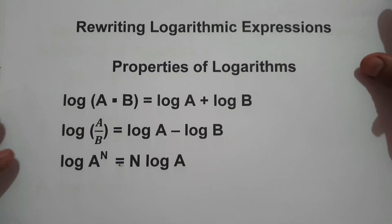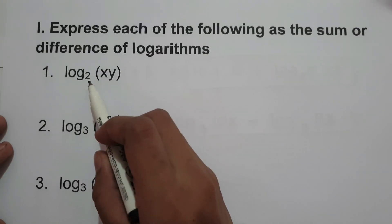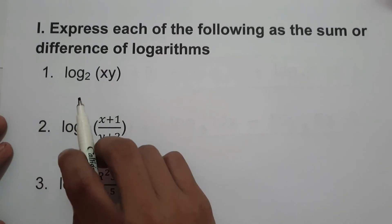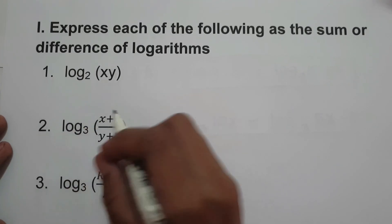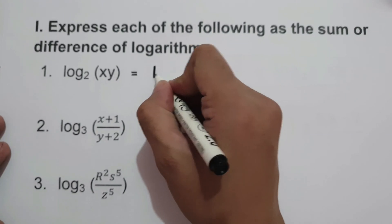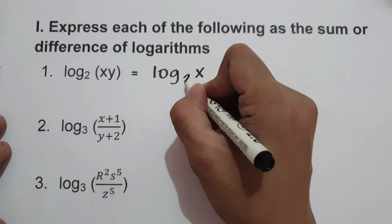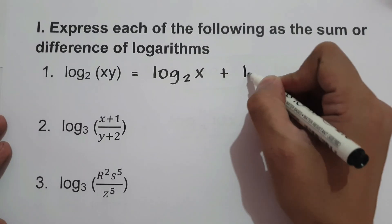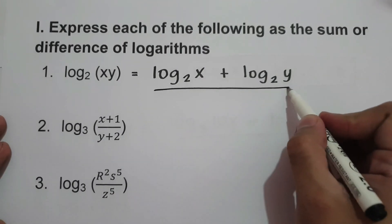Let's have an example. Express each of the following as the sum and difference of logarithms. For number one, we have log base 2 of xy. In order to write this logarithm in terms of sum and difference, we're going to have log base 2 of x plus log base 2 of y. So this will be our final answer.